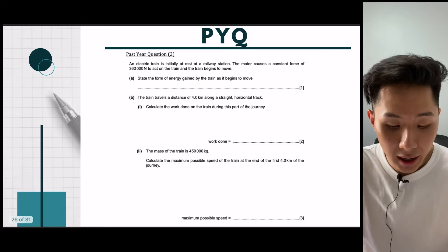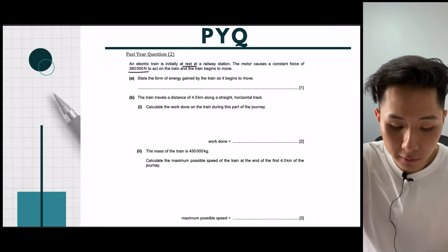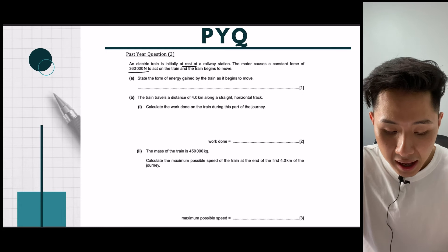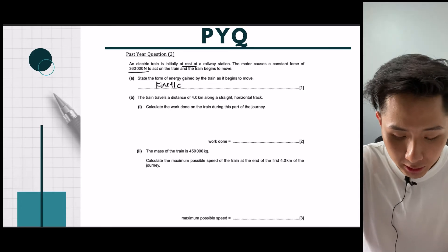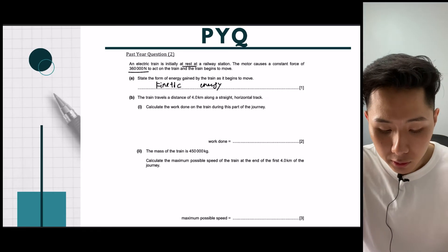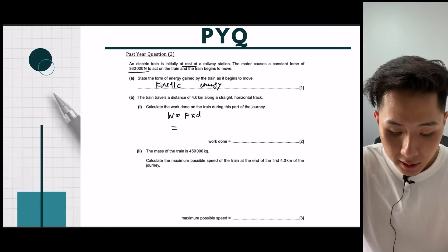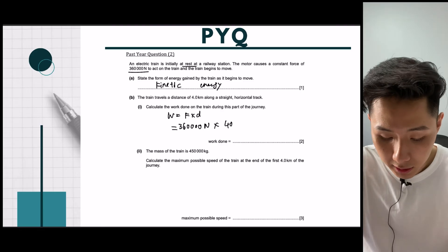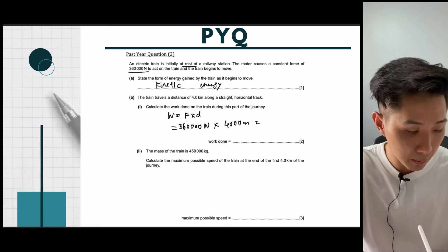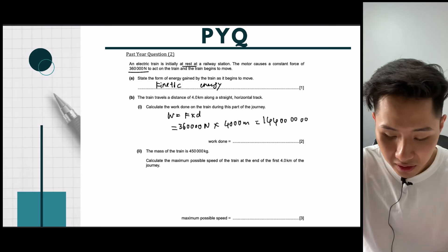So let's move on. Another possible question. An electric train is initially at rest, not moving. The motor causes a constant force of 360k Newton. State the form of energy gained by the train as it moves. So we know that as it moves, it's going to have kinetic energy. That's pretty easy. And the train travels a distance of 4 kilometers. Calculate the work done on the train during this part of the journey. So work done, again, is equal to force times distance. And my force is 360,000 Newton times distance. I'm going to convert it into meters because that's the SI unit. And if I were to do this, put this value into my calculator, I will get a very, very huge number. And it will be Joules.